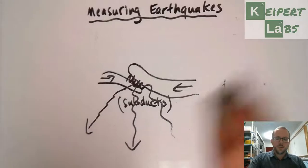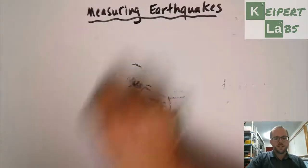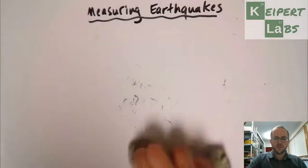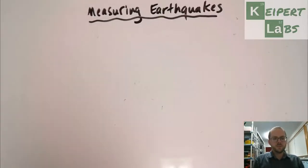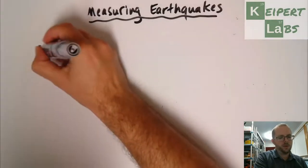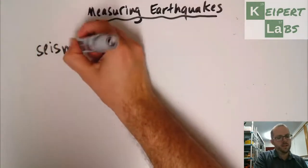There's two bits of equipment that we as seismologists, those people who study earthquakes, can use to help try and measure this. The first one is called a seismograph.